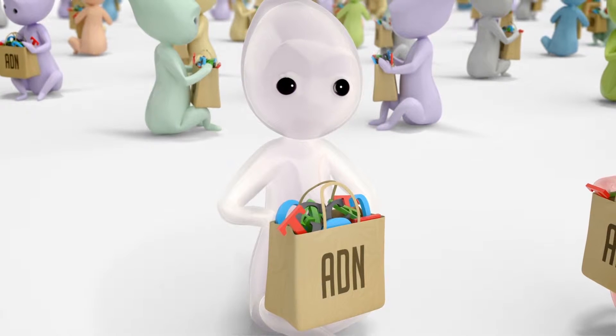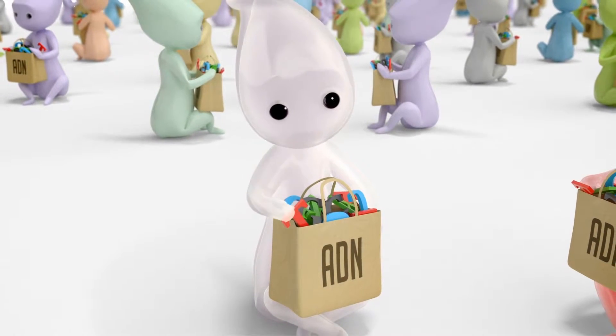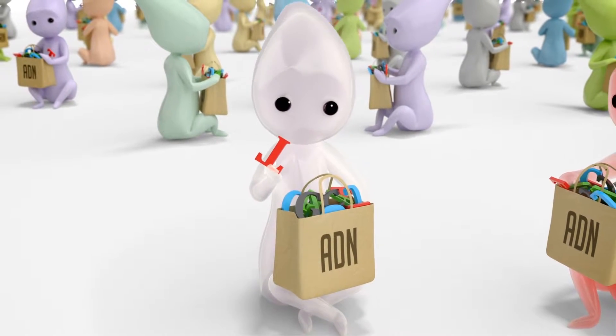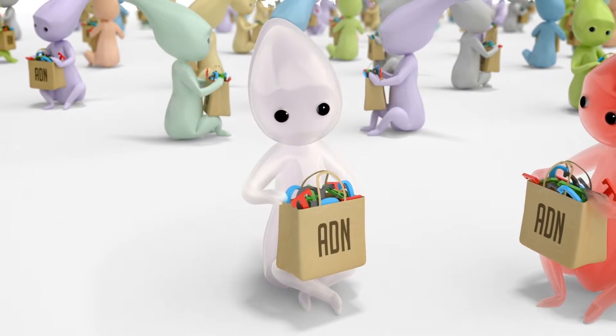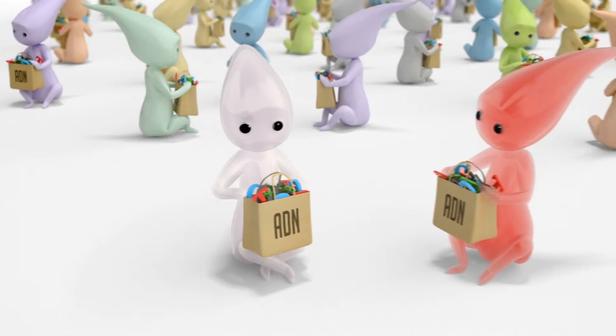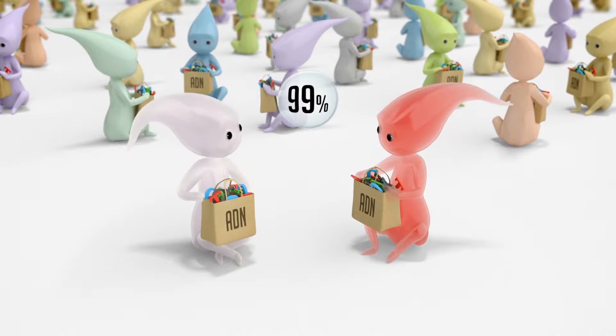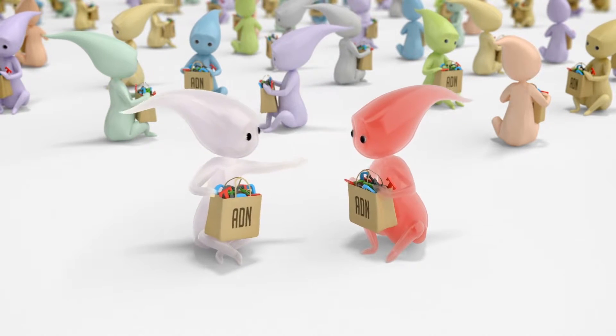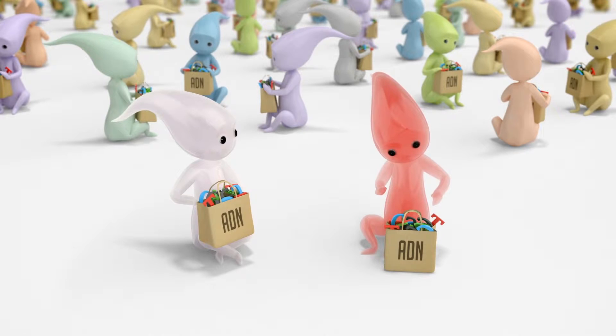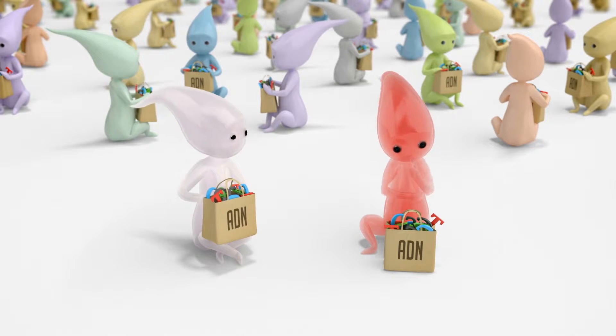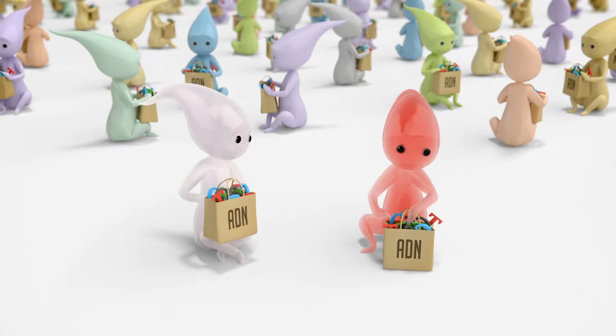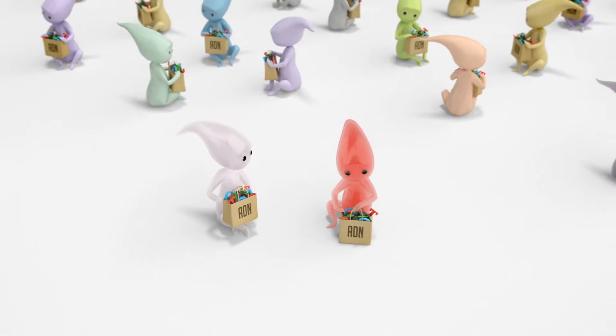Si l'on compare l'ADN de deux personnes, on retrouve en moyenne une différence, une variation toutes les 1000 lettres. Cela signifie qu'entre deux personnes, le code génétique est identique à plus de 99%. On compte plus de 3 millions de variations dans le génome d'une personne et 20 000 dans l'exome.